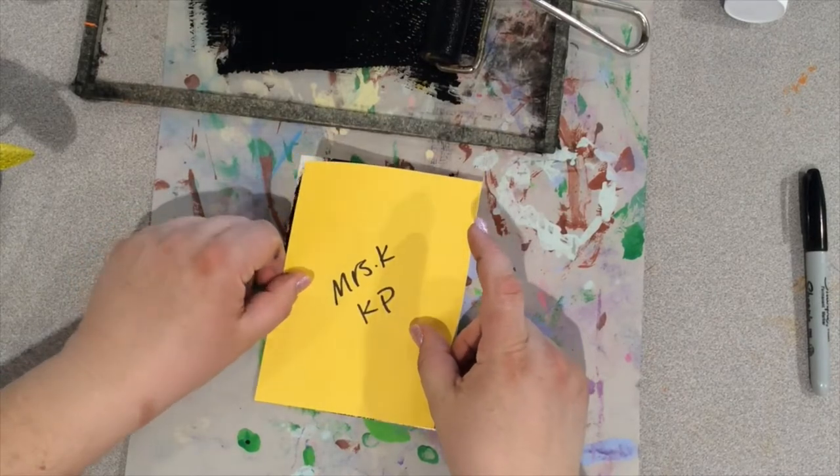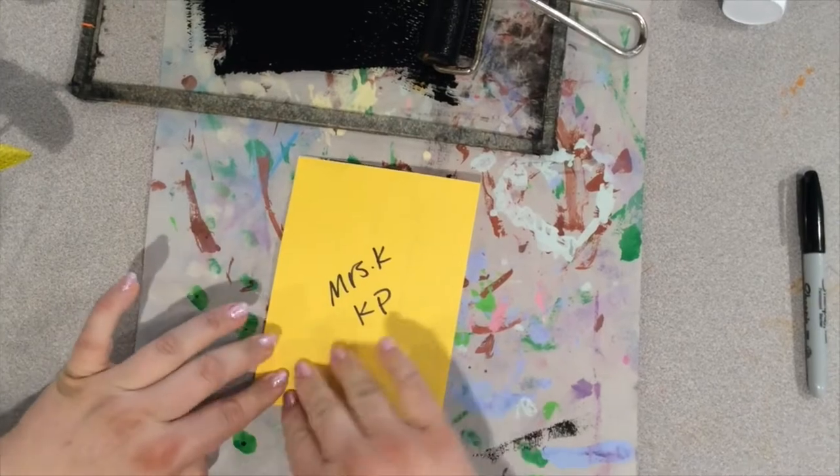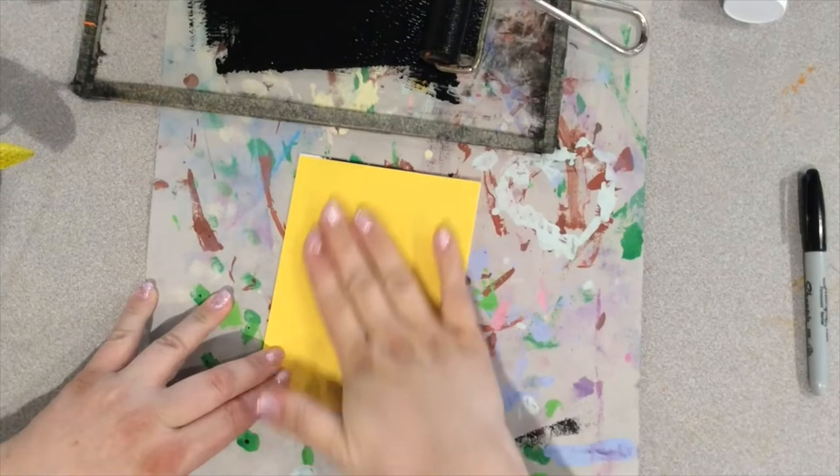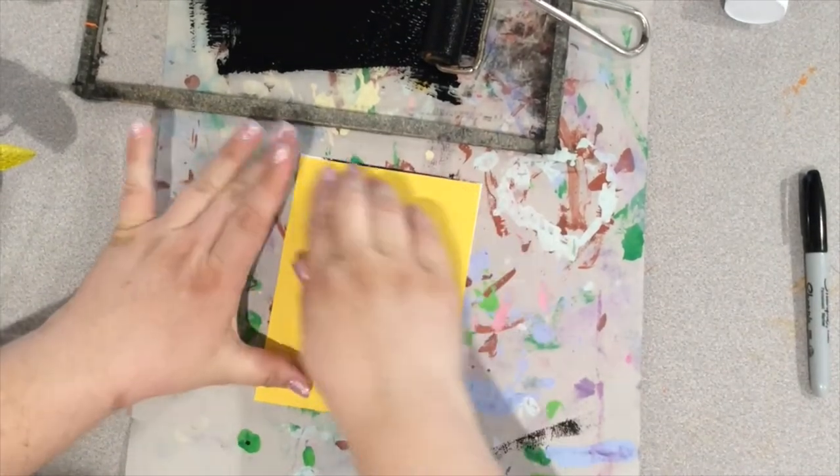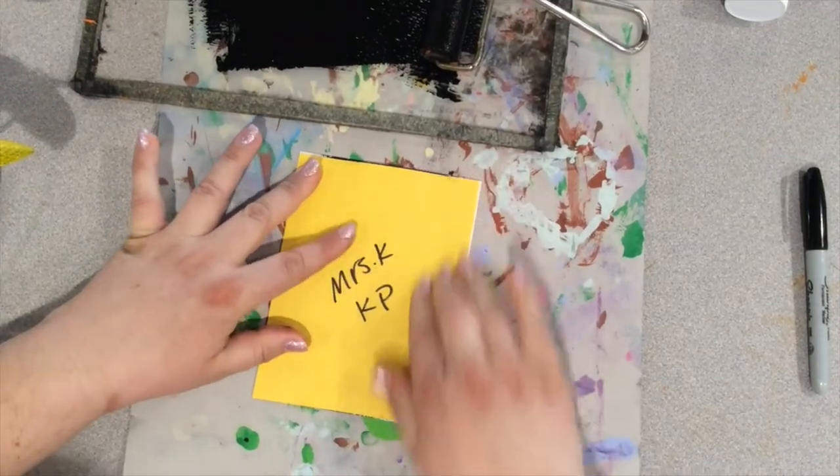Next, we're going to leave our name up and we're going to press our paper down onto the stamp. Rub the back gently, but make sure not to scoot the stamp around. If you accidentally scoot your stamp, it's going to be a little bit blurry when you pick up your paper.